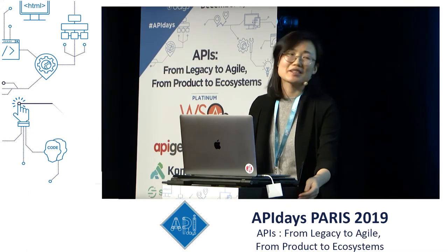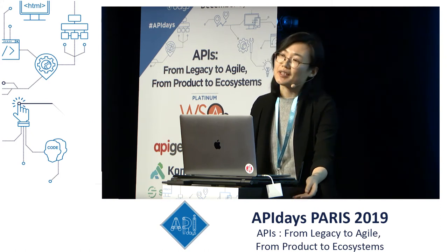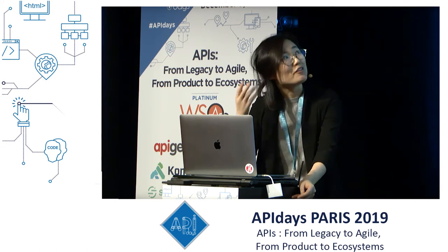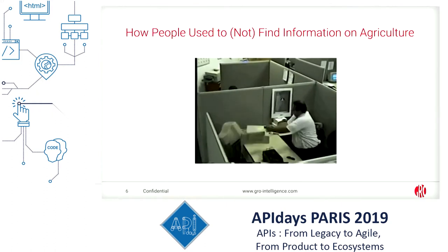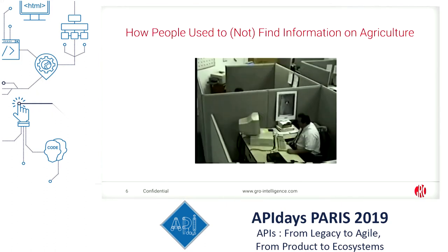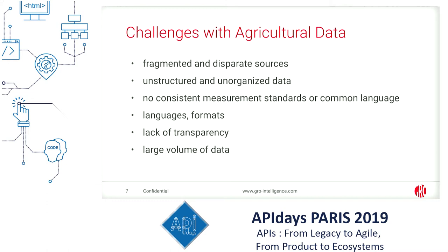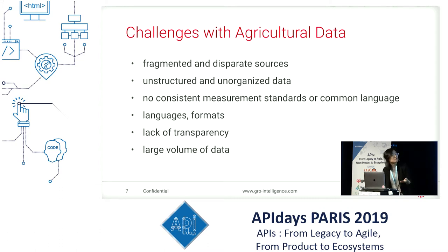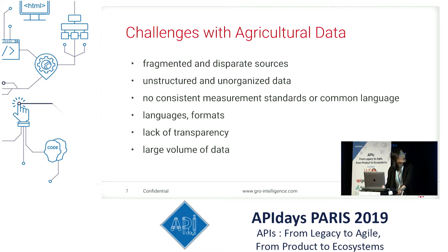To answer those questions you need a lot of data. You might think this is easy because agriculture is such a data-rich industry and much data is available in the public domain. However, this is not how people find their information in daily life. Agriculture data right now is extremely fragmented and spread across hundreds of different sources. The whole industry actually lacks consistent measurements and standards.